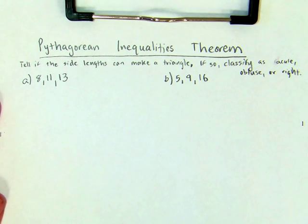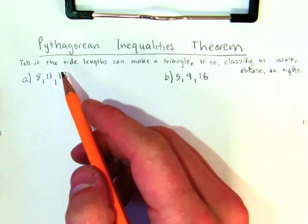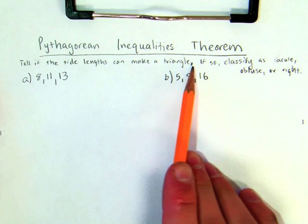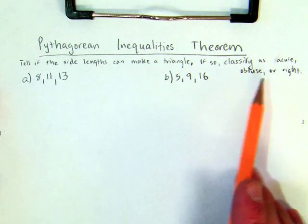Now, we're going to look at the Pythagorean inequalities theorem, and we use this theorem whenever we see problems that ask us these kinds of things. Tell if the side lengths can make a triangle. If so, classify the triangle as acute, obtuse, or right.